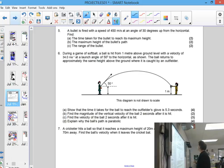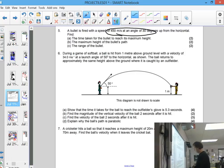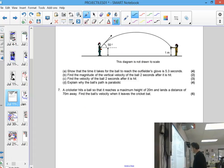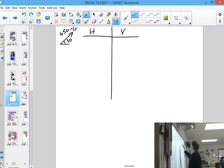Problem 5 is a bullet being fired with a speed of 450 m/s and an angle of 30 degrees. So we're going to do 450 m/s and an angle of 30 degrees.